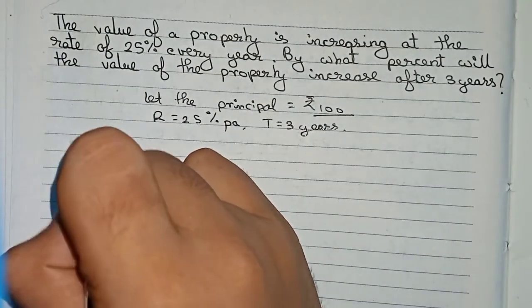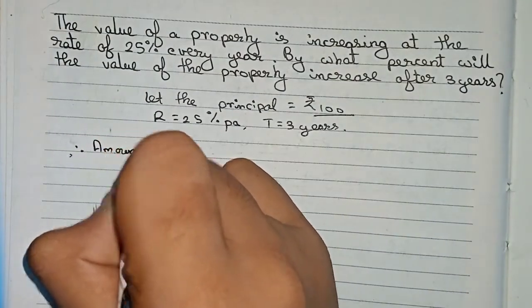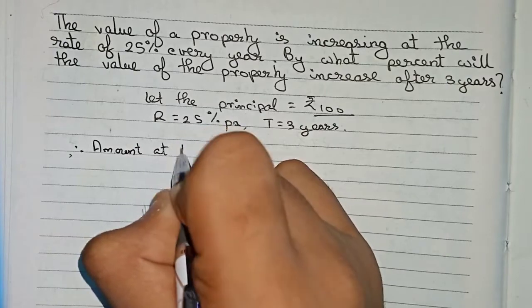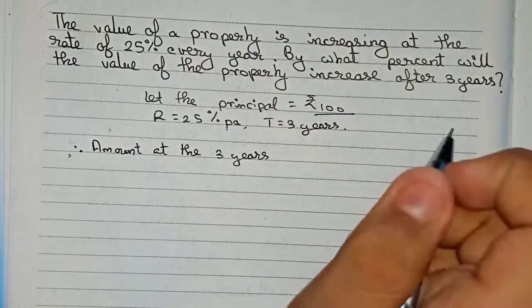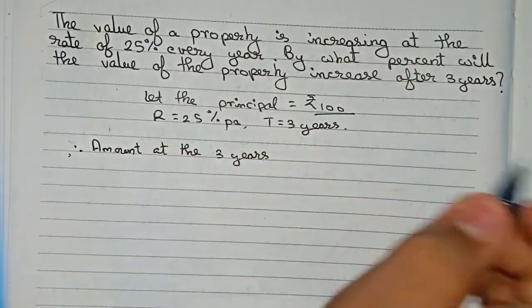Therefore, we write amount at the end of three years, or you can also write the value of the property after three years.